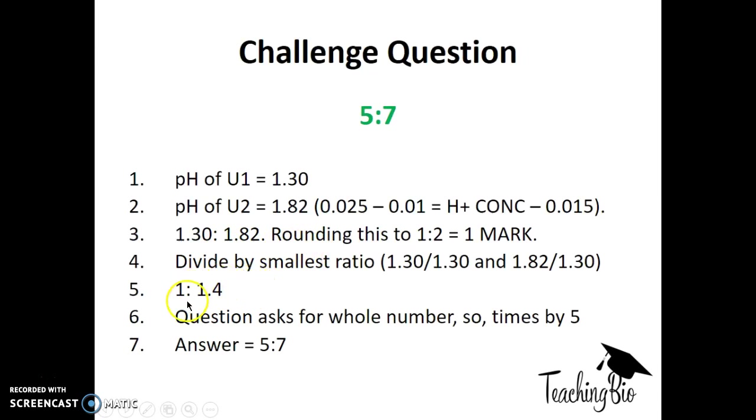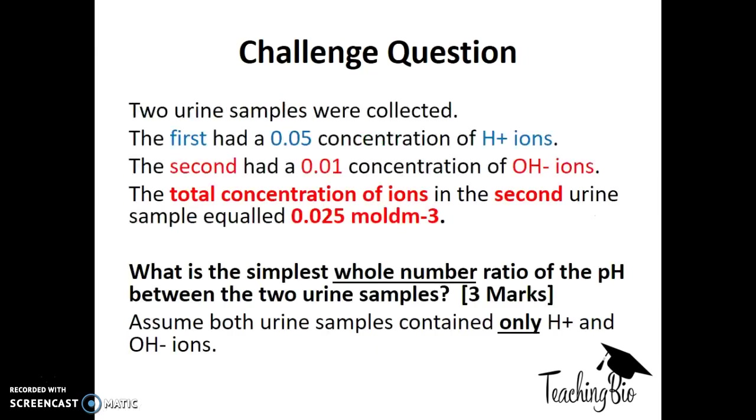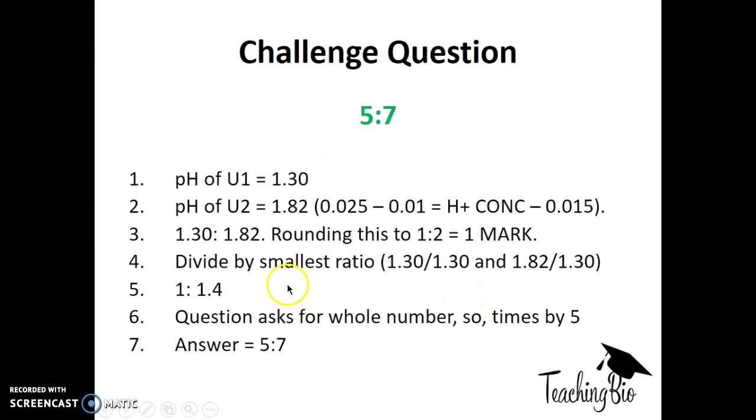Generally exams want you to give it to a ratio of 1, so you'd probably get that mark. But because the question says simplest whole number ratio, you need to times up the answer. By multiplying by 5, we get our simplest whole number ratio of 5 to 7. If you don't understand how I did this or if you did it a different way, please leave a comment below and I'll get back to you.